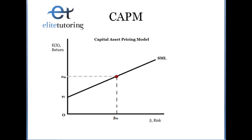Hi, this is Julie Carreri from EliteTutoring.ca. In this lesson, I will explain to you in brief the Capital Asset Pricing Model, or CAPM. This model shows the relationship between risk and return and helps us calculate required returns for securities based on their level of risk. The model is quite simple and is actually used in real life to calculate expected returns for securities.